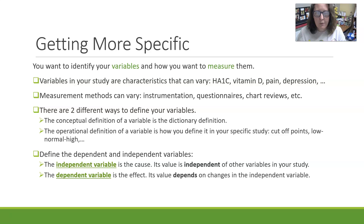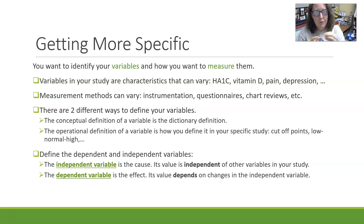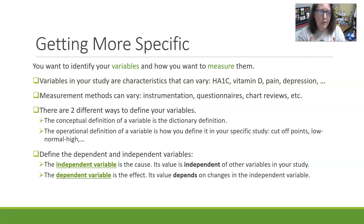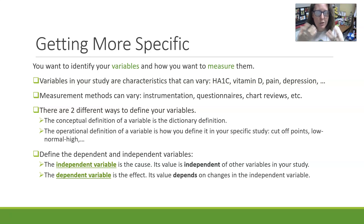There are two different ways to define your variables. There's the conceptual definition — that's the dictionary definition. For A1C, for example, it would be hemoglobin that sugar has attached itself to. The higher the blood glucose level, the higher the amount of A1C. It reflects the average glucose level over a period of two to three months. So that could be the conceptual definition of A1C.